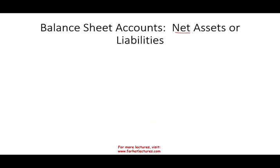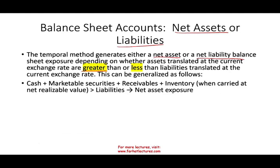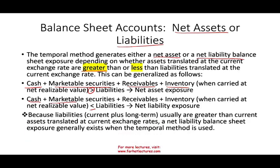Sometimes we're going to have a net asset exposure, sometimes a net liability exposure, depending on whether we have more assets or liabilities. The temporal method generates either a net asset or a net liability balance sheet exposure depending on whether the assets translated at the current exchange rate are greater than or less than the liabilities translated at the current exchange rate. We take cash plus marketable securities plus receivables plus inventory — when carried at net realizable value — and compare to liabilities. Because current and long-term liabilities usually exceed assets translated at the current rate, a net liability balance sheet exposure generally exists under the temporal method.